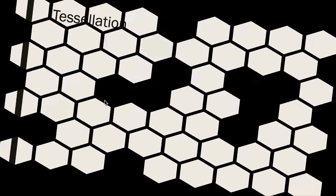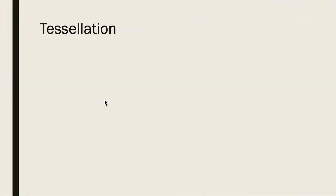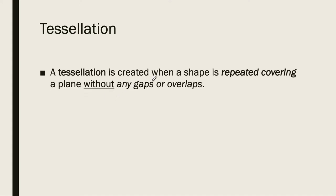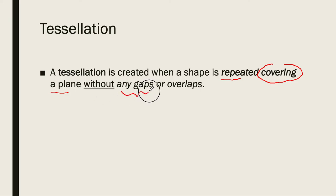Let's first define what a tessellation is. A tessellation is created when a shape is repeated, covering a plane without any gaps or overlaps. It's a repeated shape covering a whole plane — that is, a surface — completely, without any gaps and without any overlaps.